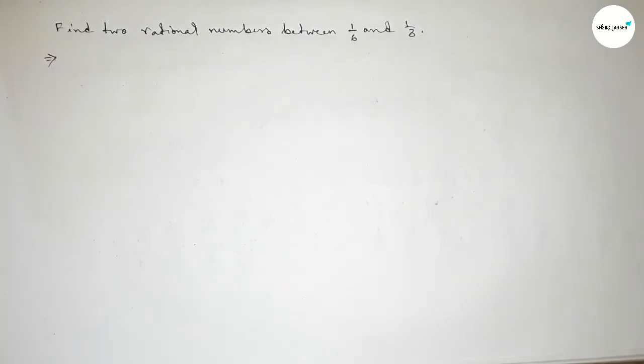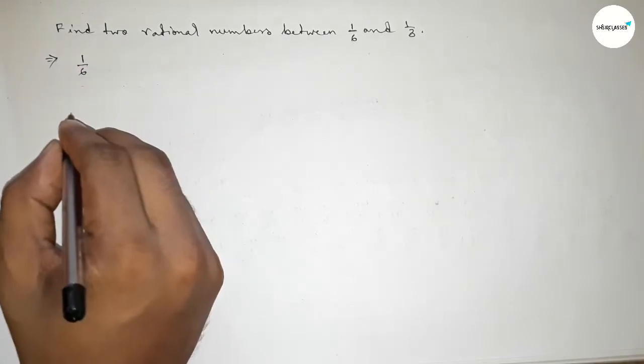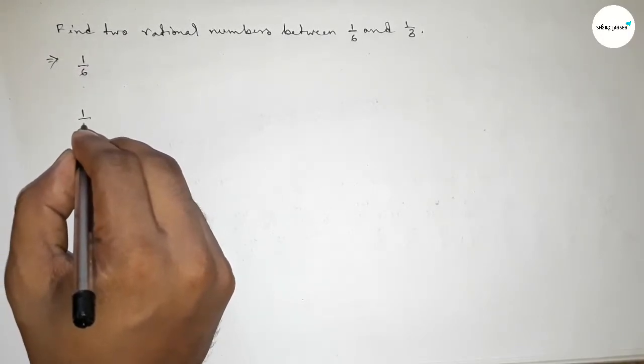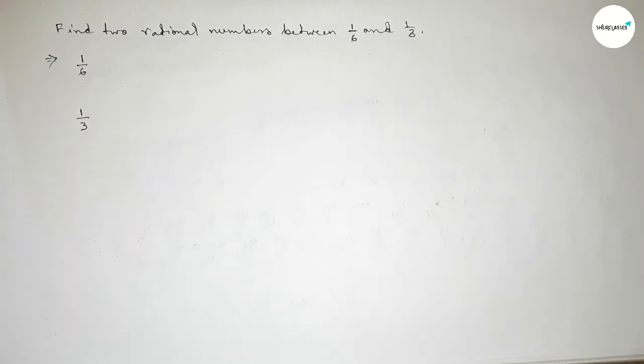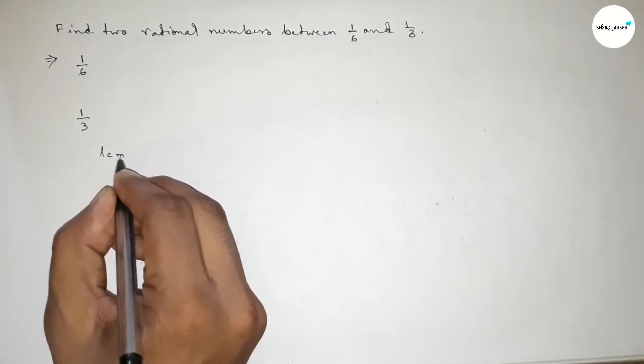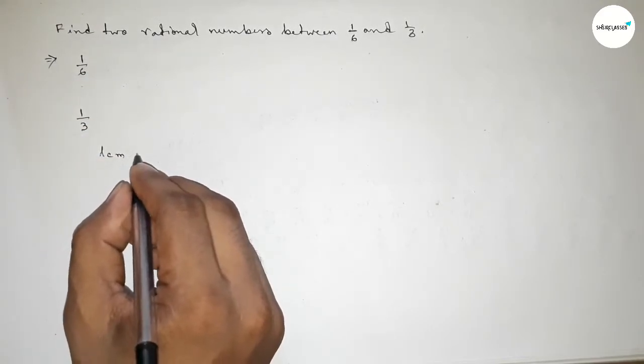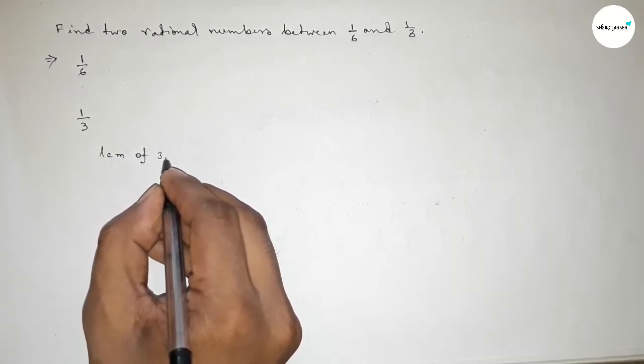So here given two numbers, first one 1 over 6 and 1 over 3. And here the denominator of both numbers are not same, so first we have to find out the LCM of 6 and 3.